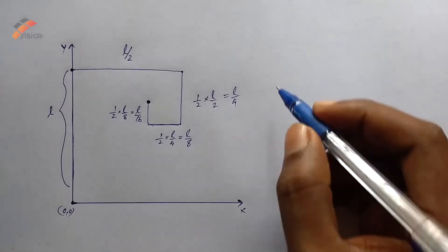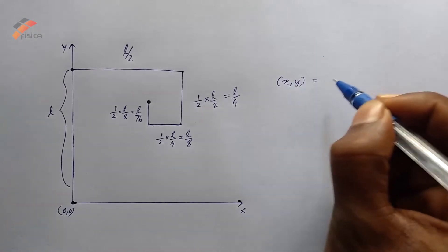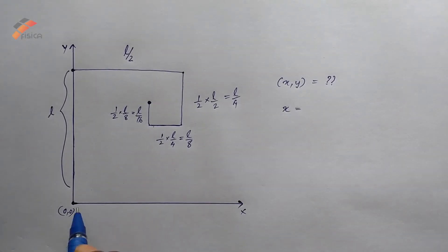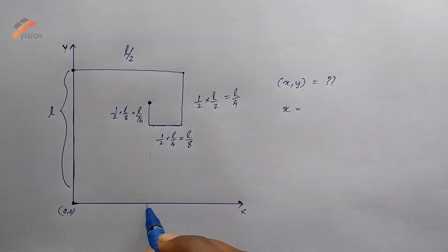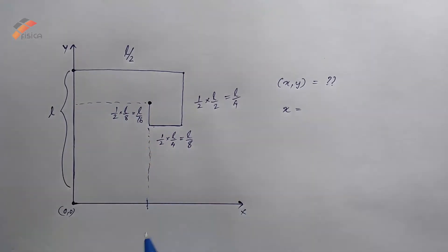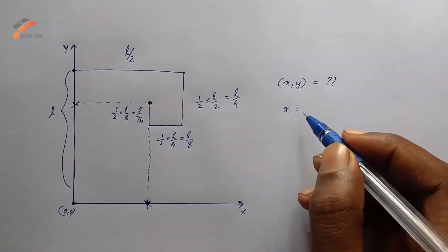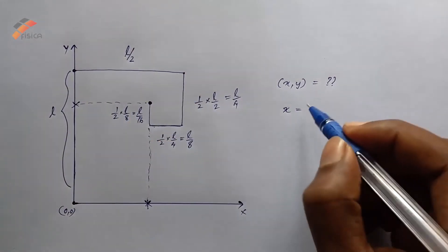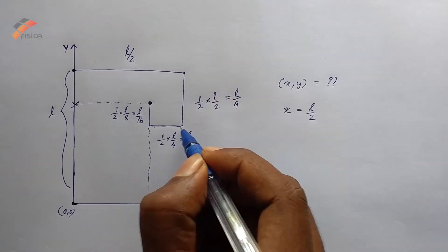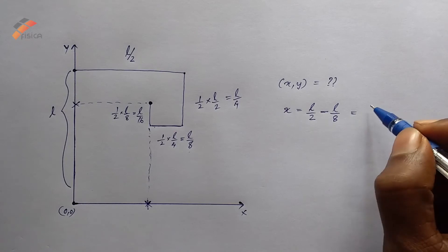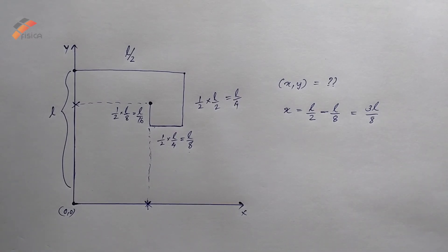The coordinate is represented as (x, y). We have to find out x and y. For x: the ant first travels L/2 in the positive x-direction, then turns back and travels L/8 in the negative x-direction, that is minus L/8. So x = L/2 - L/8 = 3L/8.